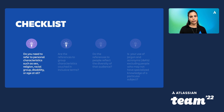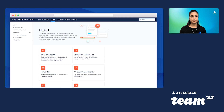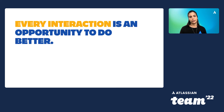Here's a little checklist for when you're trying to be inclusive. Ask yourself: do you need to refer to a personal characteristic such as sex, religion, a racial group, disability, or age at all? Are there references to group characteristics couched in inclusive terms? Do your references to people reflect the diversity of your actual audience? And is the use of jargon and acronyms excluding people who may not have specialized knowledge? If you're stuck, head to atlassian.design/content where you can find all of the information from this talk. And remember: every interaction is an opportunity to do better. Thank you.